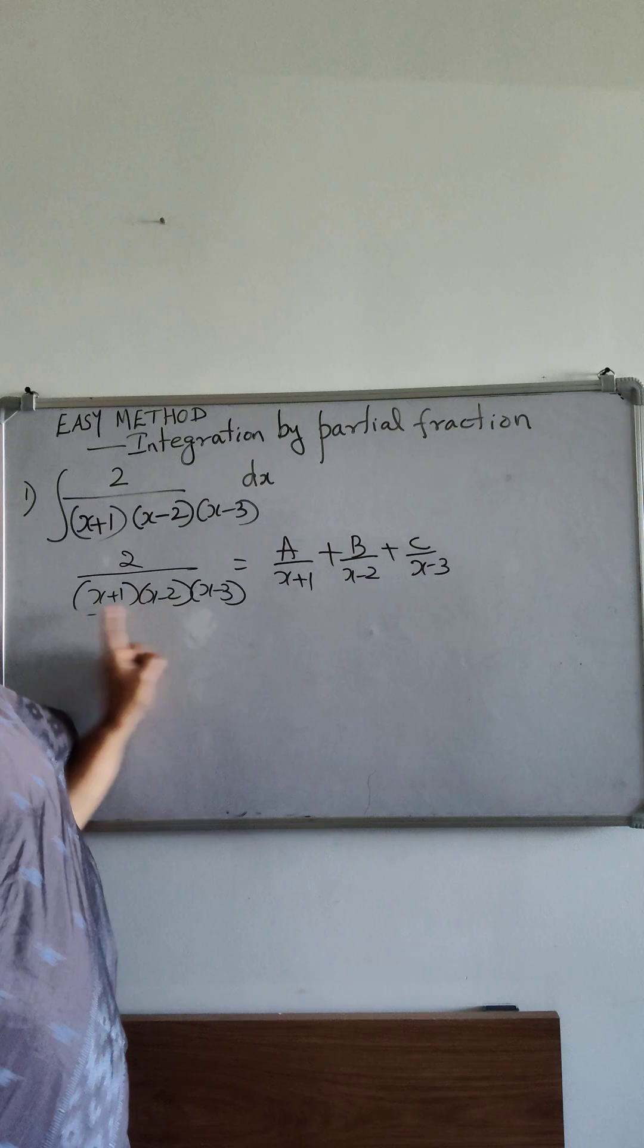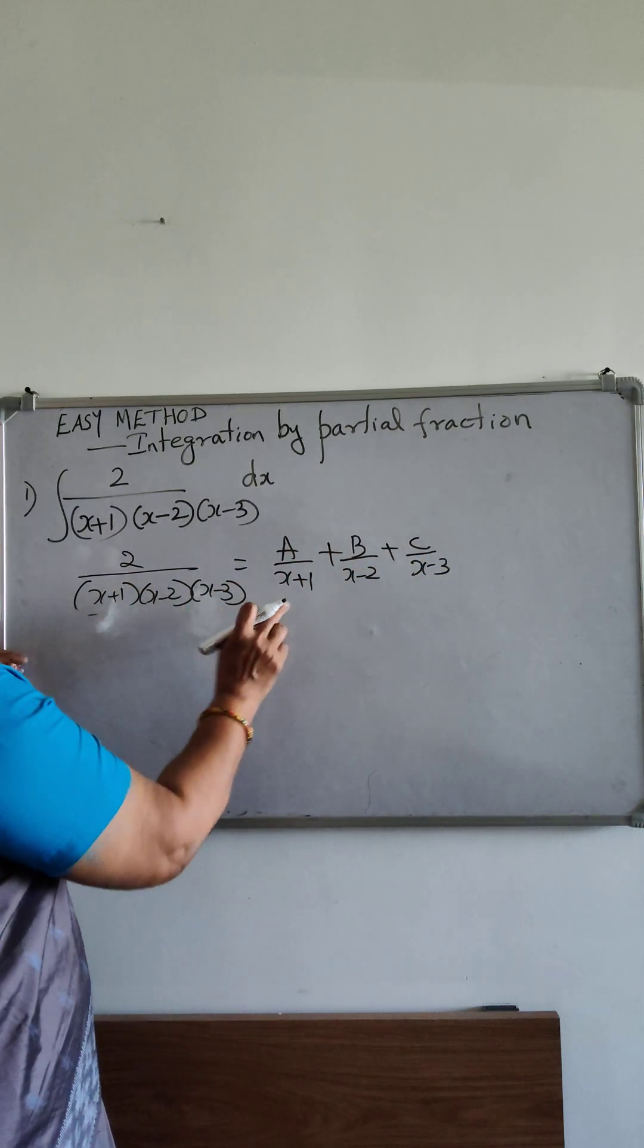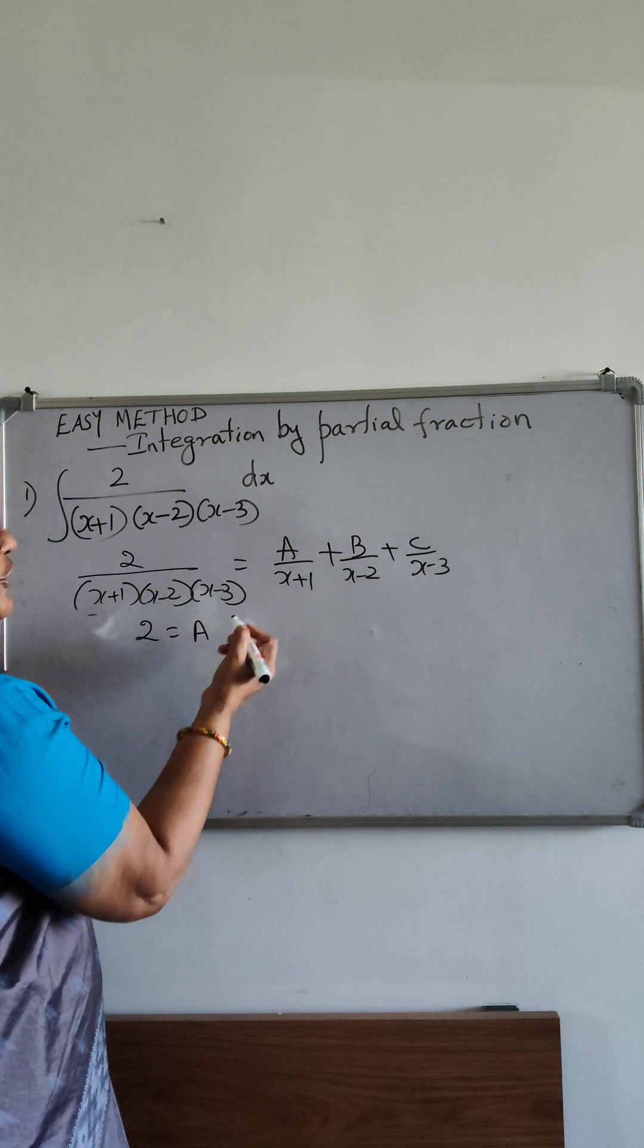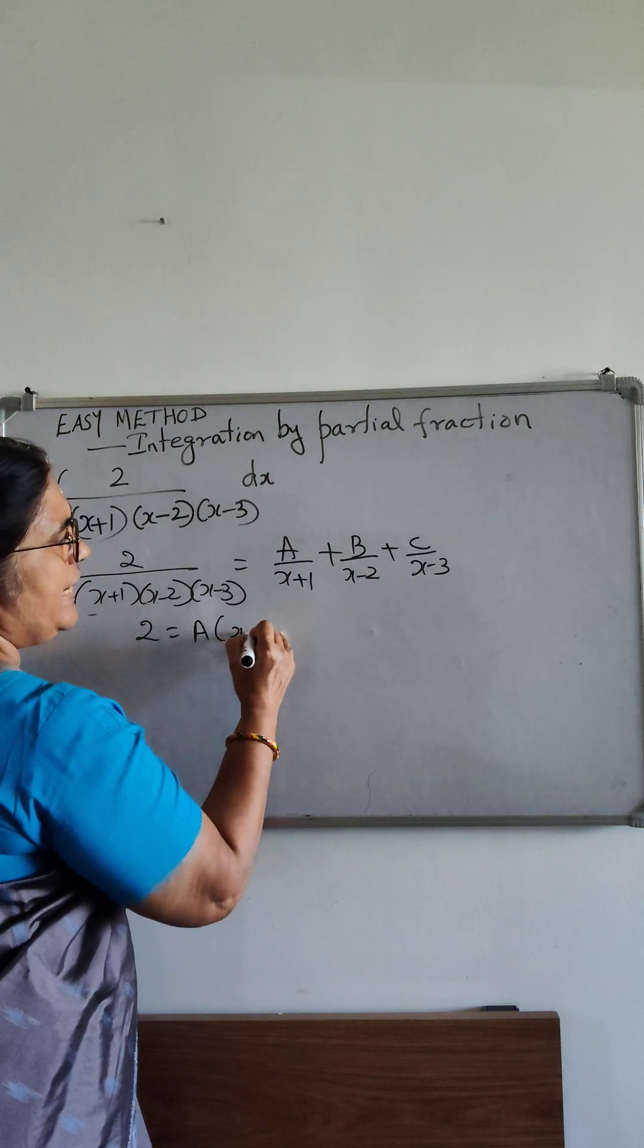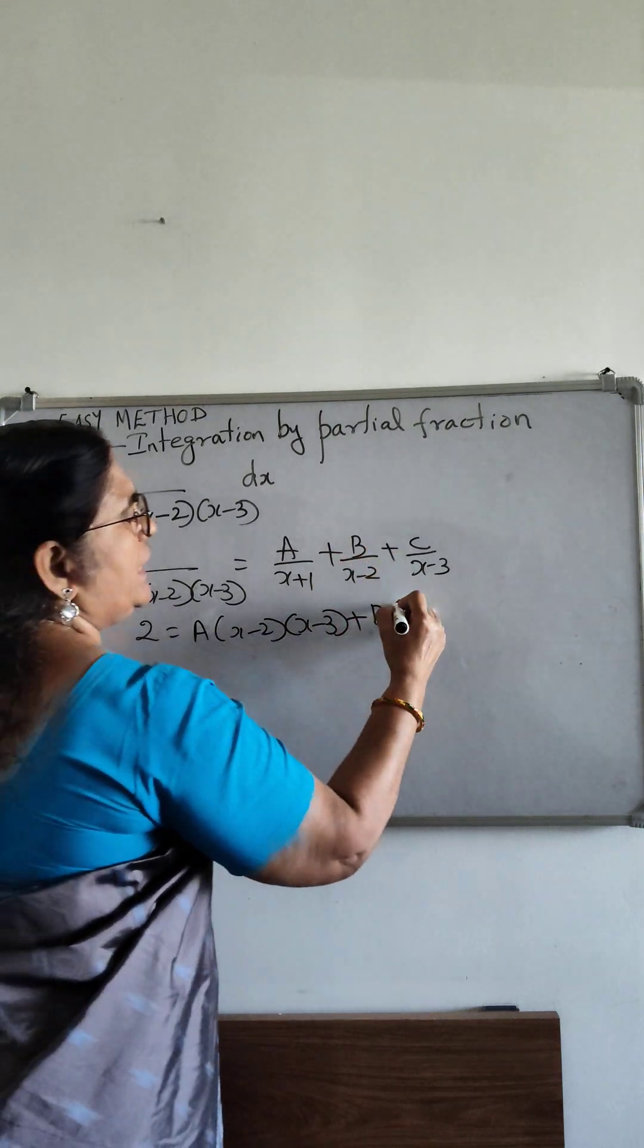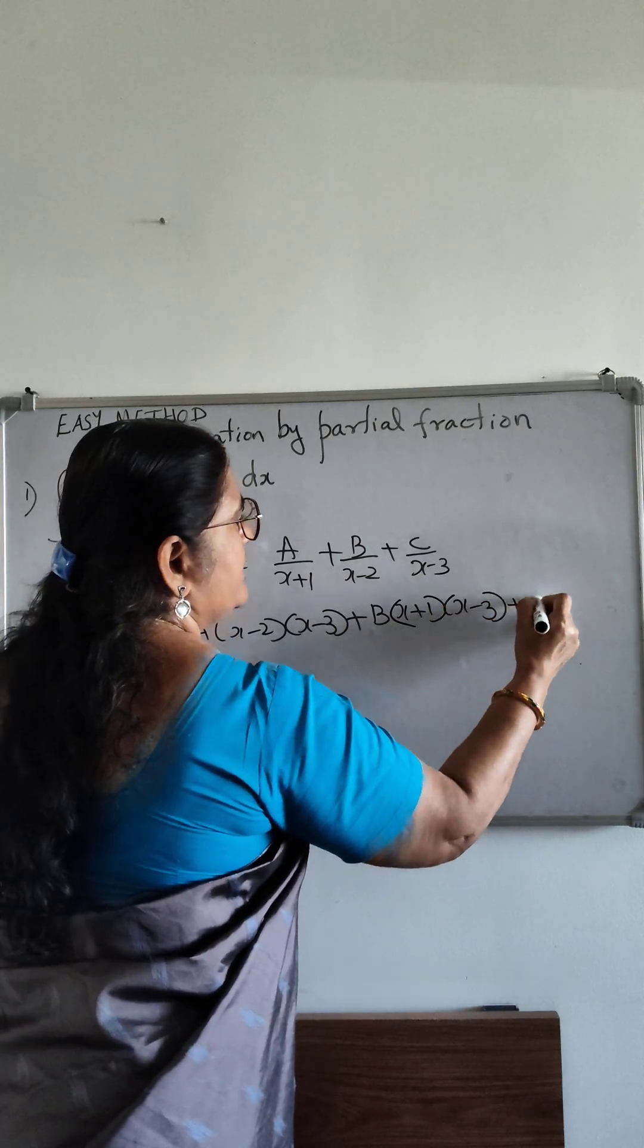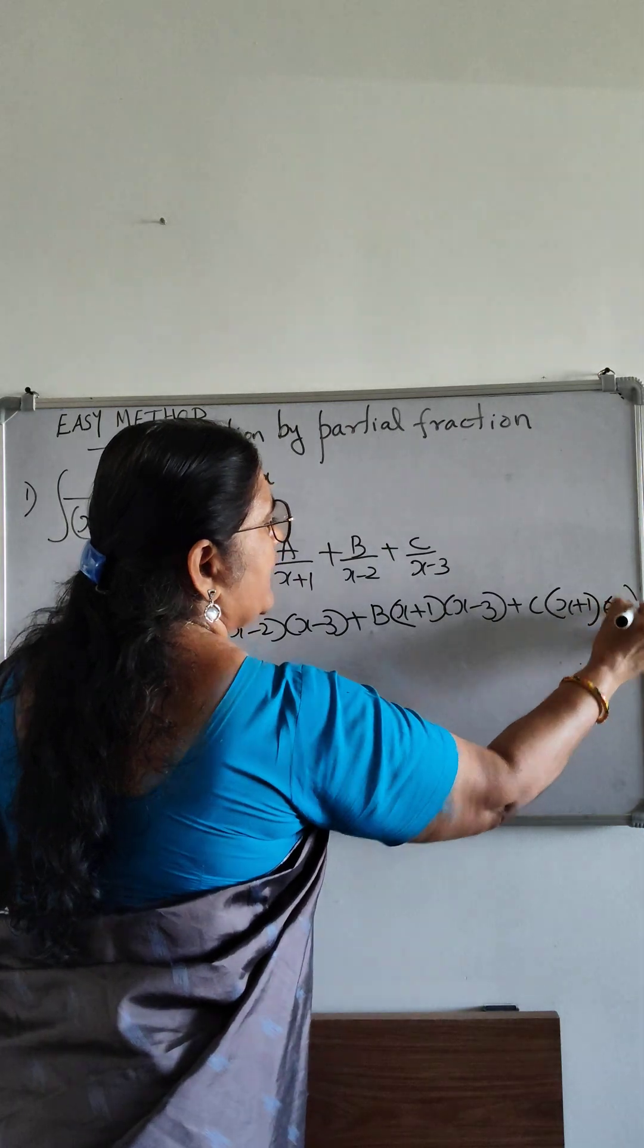Multiplying the whole equation by x plus 1 into x minus 2 into x minus 3, we have 2 equal to a into x minus 2 x minus 3 plus b into x plus 1 x minus 3 plus c into x plus 1 into x minus 2.